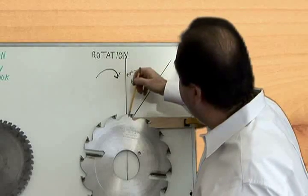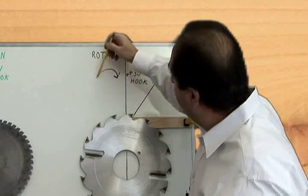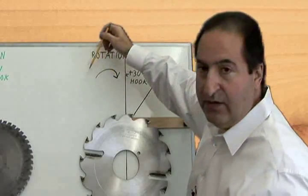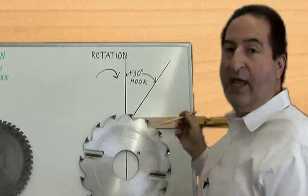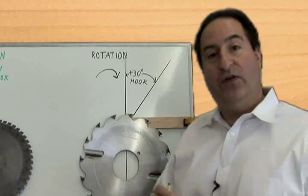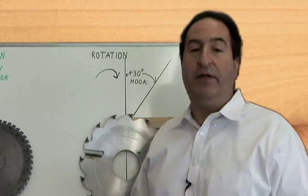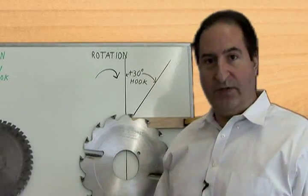If the tooth on your saw blade leans away from the direction of rotation, that's a negative hook saw blade, and that will throw the material right at you. If you've ever used a negative hook saw blade on a table saw, the material comes at you.